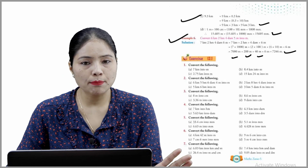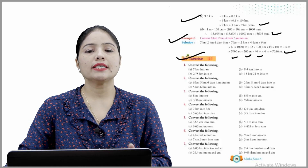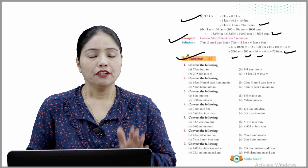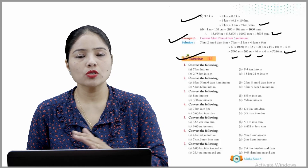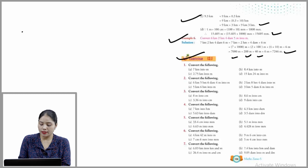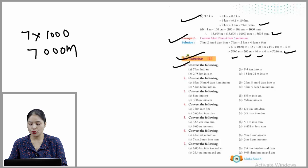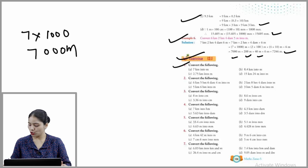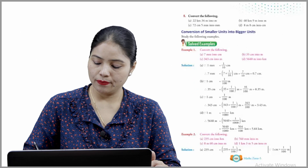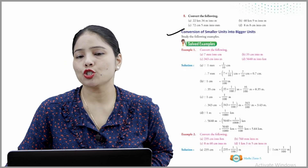Exercise 13.1 — convert the following. First one: 7 km into meters. We know 1 km = 1000 meters, so 7 km = 7 × 1000 = 7000 meters. These are the questions you have to complete on your own — it is very easy.